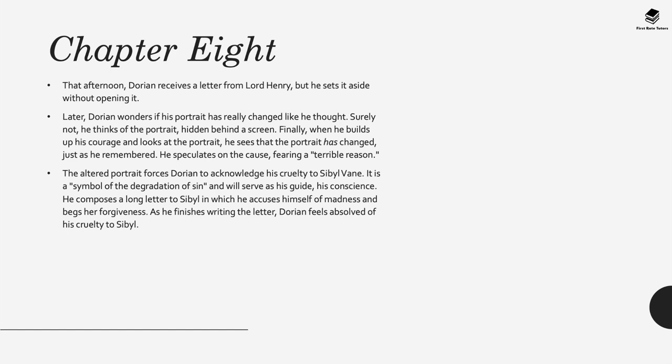In chapter eight, Dorian wakes up very late that afternoon and finds he's received a letter from Lord Henry. However he sets it aside without opening it. Later, Dorian wonders if his portrait has really changed or if he was seeing things because of how late it was. He builds up the courage, finds the portrait he'd hidden behind his screen, and realises the portrait has changed, remembering the events of the night before. This altered portrait forces Dorian to acknowledge his cruelty to Sybil Vane, and he decides he is going to beg her for forgiveness. He writes her a letter and as he finishes writing it, feels absolved of any cruelty to Sybil.